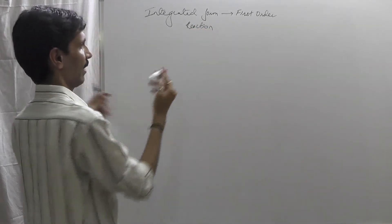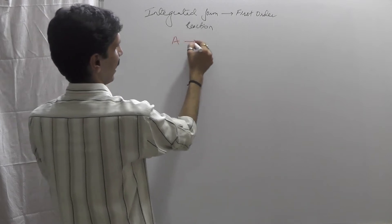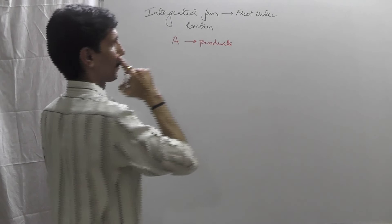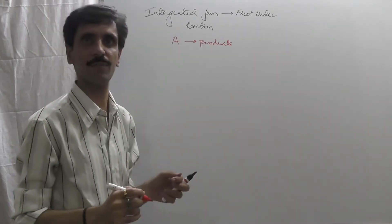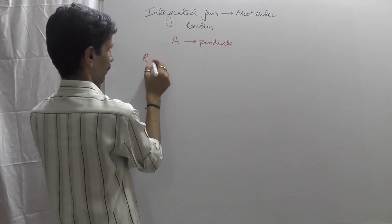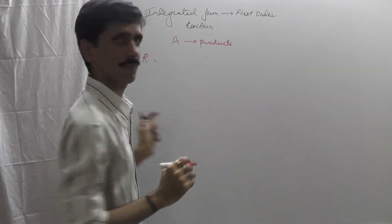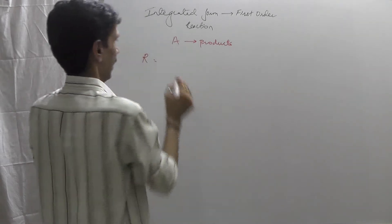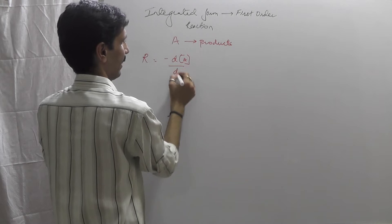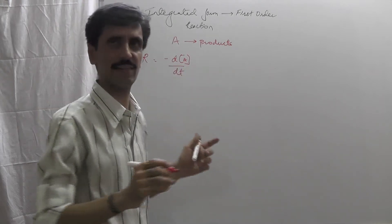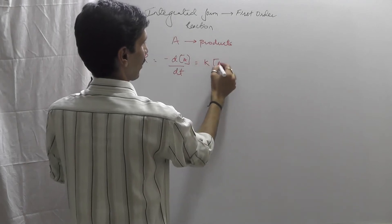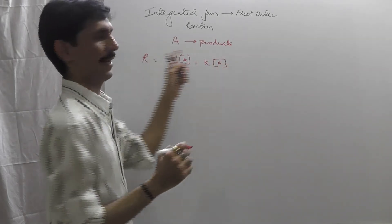Let us consider a first order reaction, that is A giving products. According to the rate law expression, the rate is equal to negative d[A]/dt. This is the rate of reaction and that can also be given as K into concentration of A. This is the rate law expression.